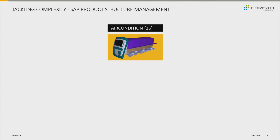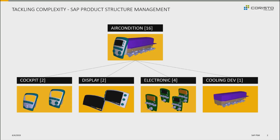We've prepared a simplified example: a car air conditioning or AC device. As you can see, it consists of a cover, a display, an electronics unit, and a cooling device. For three of these functions, there are several solutions that are used based on the configuration of the finished AC.